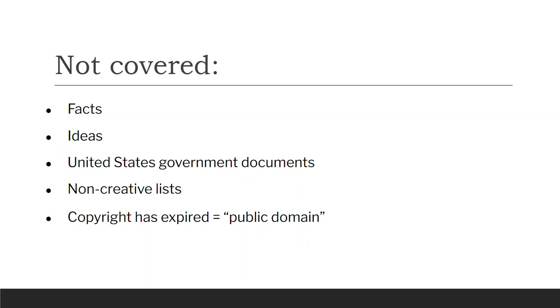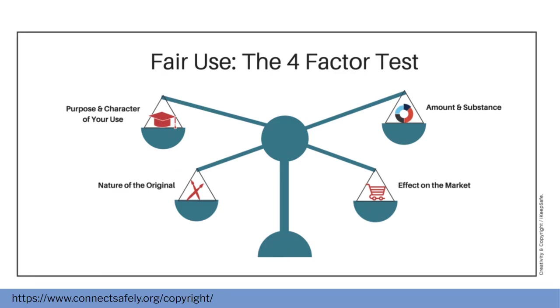In education, we don't always have the money to pay for copyrighted use of everything we want to do, and it's the same in some other fields. So there's a law called the fair use law — a way to use copyrighted work for limited purposes. It's not a black-and-white decision. There's a four-factor test for fair use: the purpose and character of your use, the nature of the original work you're borrowing from, the amount and substance of what you're using, and the effect on the market from your use.